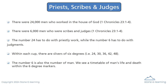Priests, scribes, and judges — there were 24,000 men who worked in the house of God, 1 Chronicles 23:1–4. There were 6,000 men who were scribes and judges. The number 24 has to do with priestly work, while the number 6 has to do with judgments.